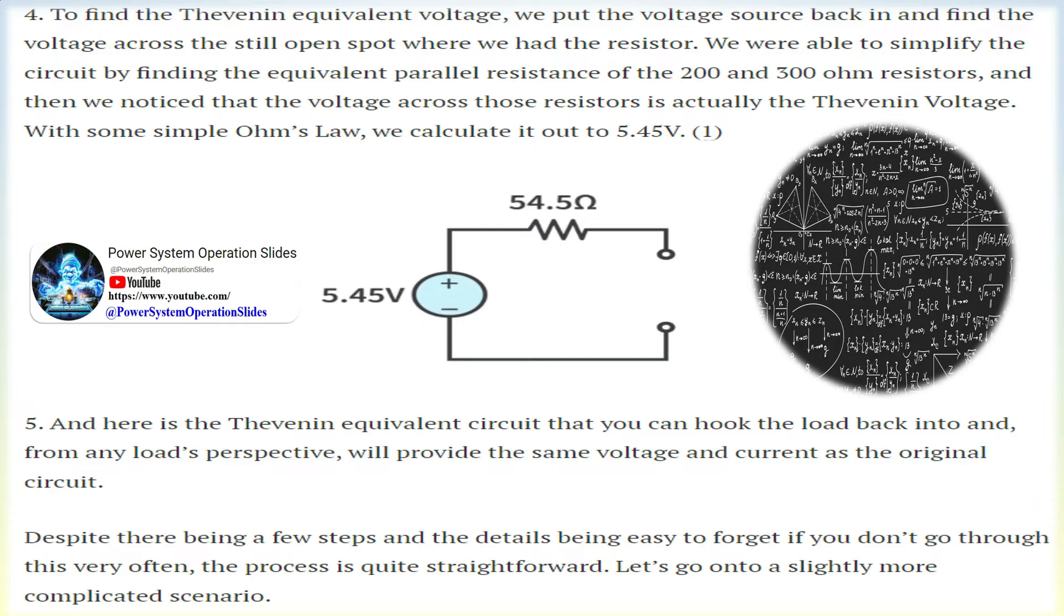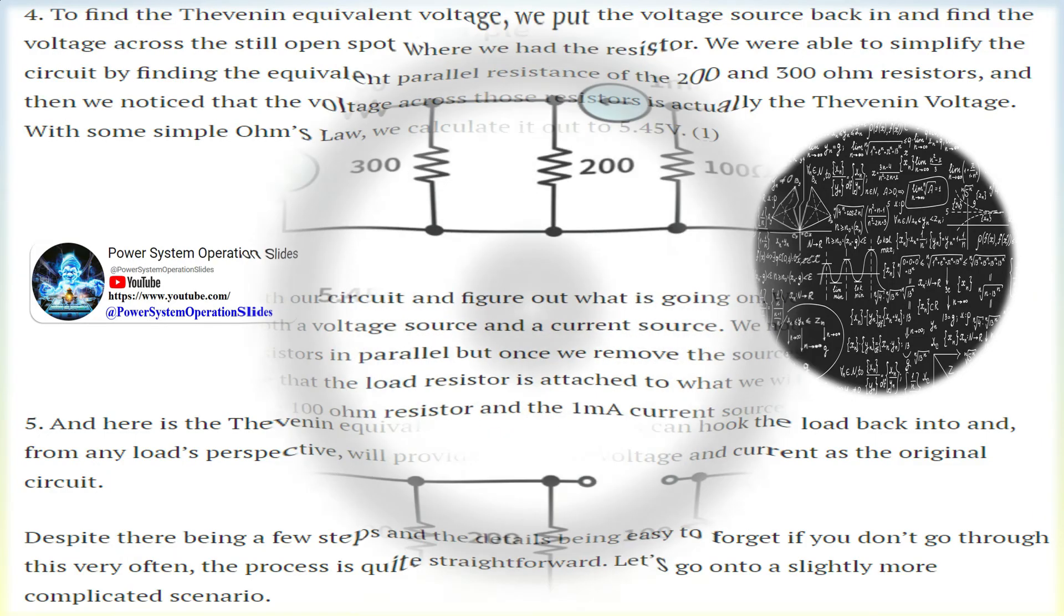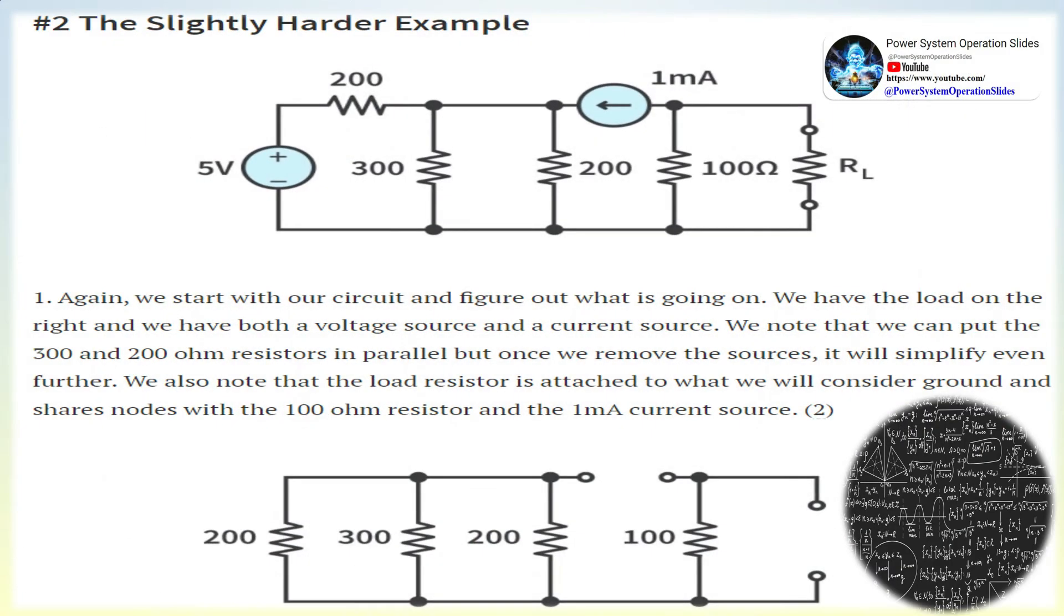It is important to note that the voltage and resistance figures for the Thevenin source and resistor do not correspond to any actual component from the original circuit. Thevenin's theorem is useful for determining what happens to a single resistor in the network across terminals A and B, depending on which two nodes are chosen in the circuit, the Thevenin equivalent circuit will be different.